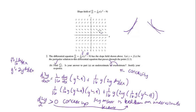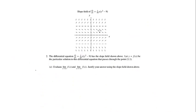We're going to get two points: one point for getting this second derivative, and then one point for saying it's an underestimate and explaining why. That gives us two points. The next part: evaluate the limit as x approaches infinity of f of x and the limit as x approaches negative infinity of f of x. Justify your answer using the slope field — they want us to look at the slope field.